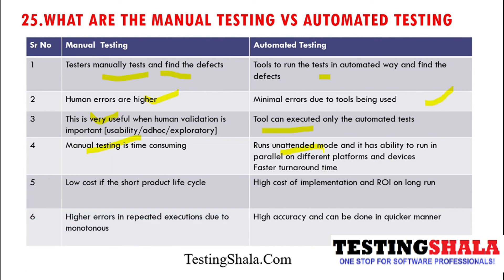Manual testing has a lower cost for short product life cycles — if an application is implemented within 2 or 3 months, manual testing is very beneficial. For automation testing, there should be a long-running project with many releases, at least a minimum tenure of 2 to 3 years for the application, otherwise investing money in automation testing will not fetch a good return on investment.